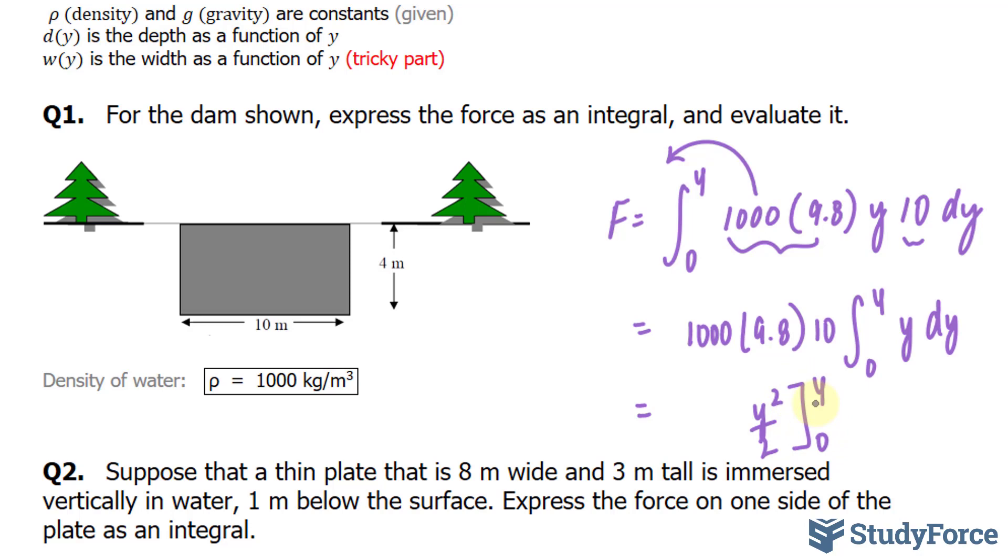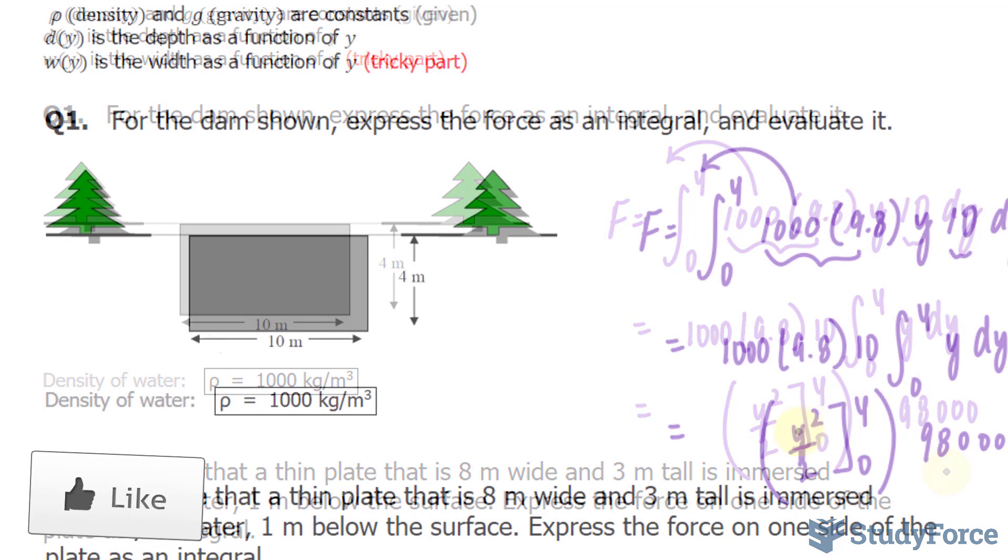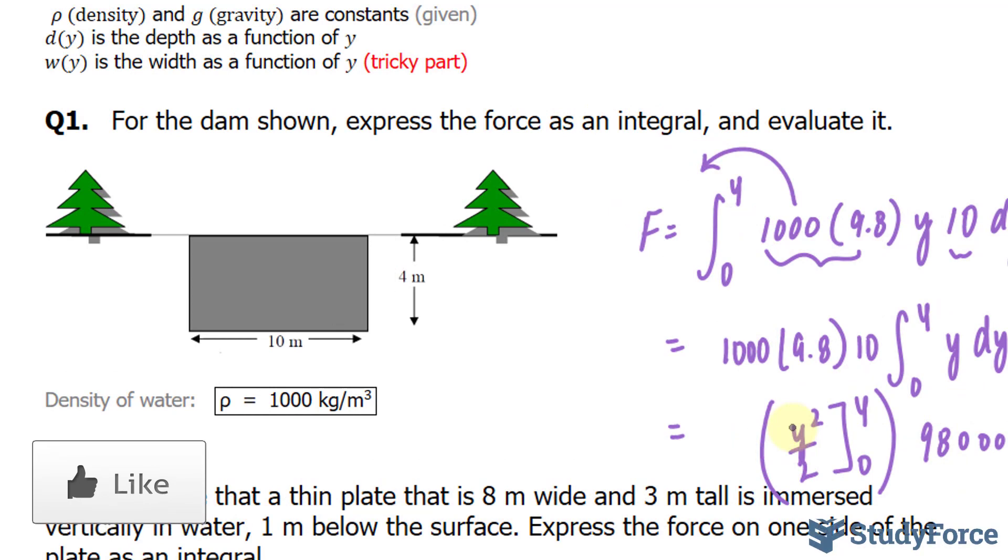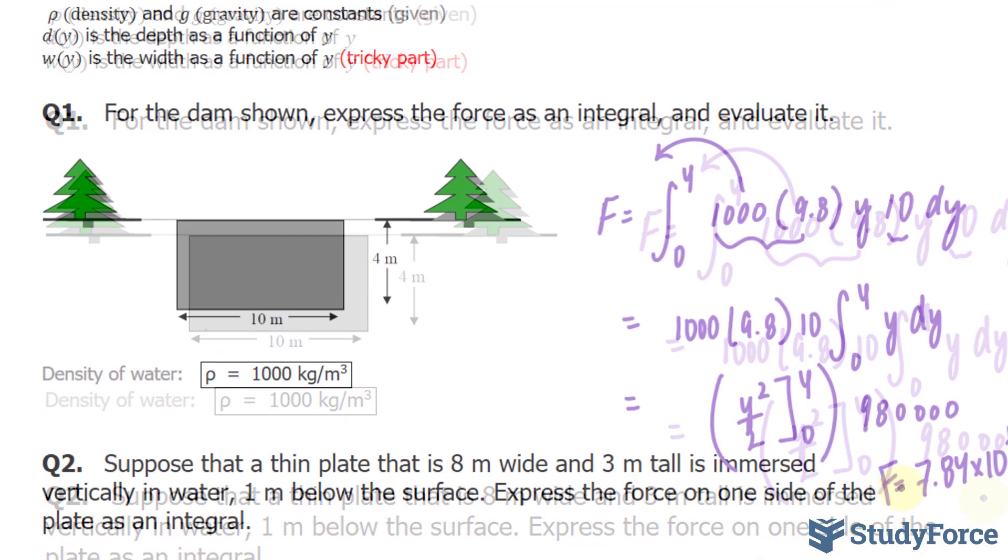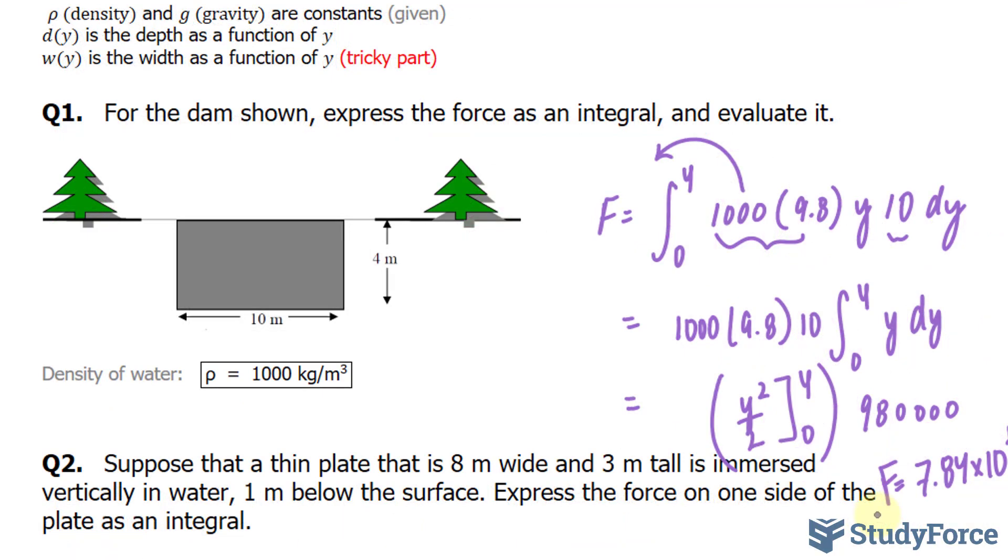We know that at 0, it will be nothing. And of course, whatever you find here, you'll multiply to all of this, which is equal to 98,000. 4 to the power of 2 is 16, divided by 2 is 8. Multiplying this number by 8, we get 784,000 newtons. That's the force for question number 1. And that's the force that's being exerted on this tiny dam that's 10 by 4.